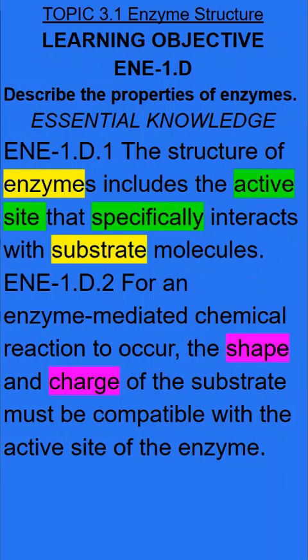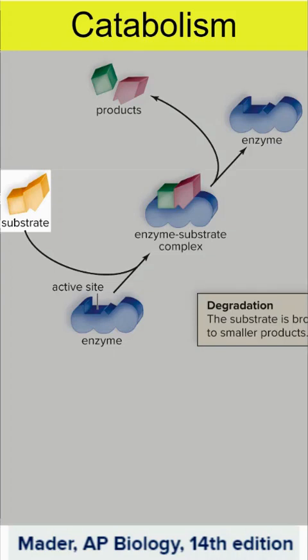Enzymes assist in chemical reactions, but there is specificity between enzymes and substrates at the active site. When we think about metabolism, which is the sum total of all chemical reactions that take place, we can have catabolism, which is breaking down, or anabolism, which is building up.